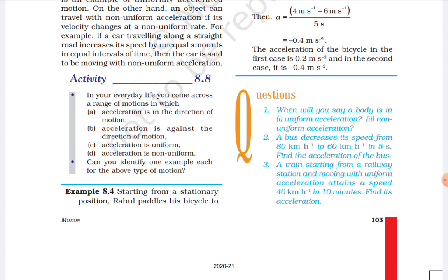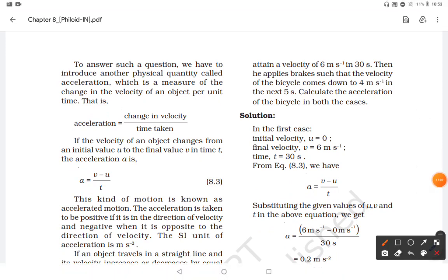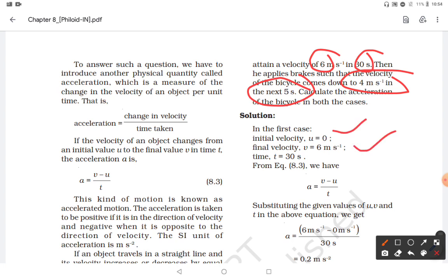Now let's look at a question. Starting from a stationary position — stationary means at rest, so initial velocity is 0 — Rahul pedals his bicycle and attains a velocity of 6 meters per second in 30 seconds. Then he applies the brakes and the speed reduces to 4 meters per second in 5 seconds. We need to find the acceleration in both cases.